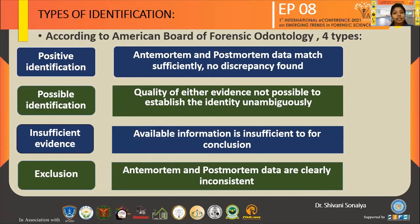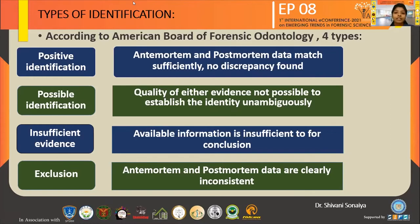Types of identification. According to the American Board of Forensic Odontology, there are four types. The first is positive identification, where the ante-mortem and post-mortem data match sufficiently with no discrepancy found. The second is possible identification, where the quality of evidence does not allow establishing identity unambiguously. The third is insufficient evidence, where available information is insufficient for a conclusion. The last is exclusion, where the ante-mortem and post-mortem data are clearly inconsistent. These types help make a proper conclusion.